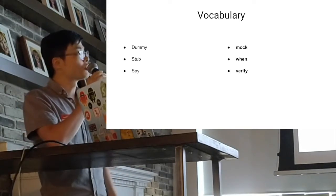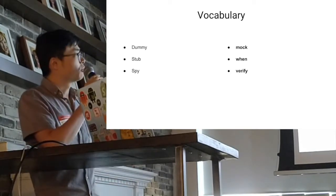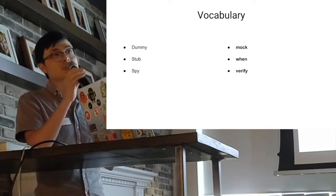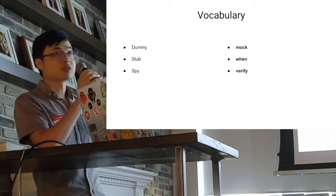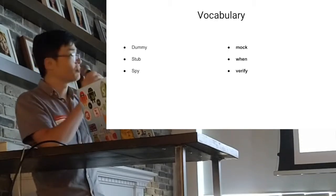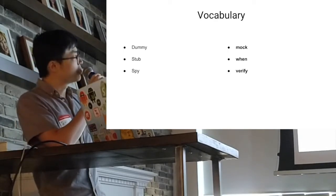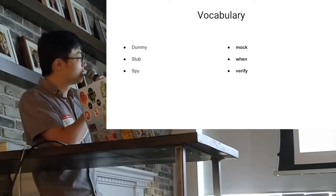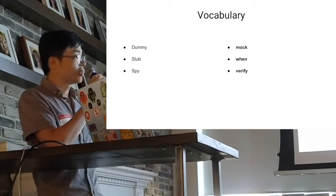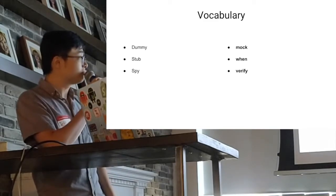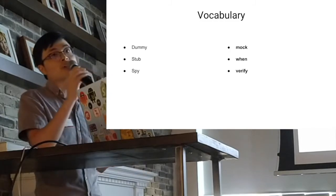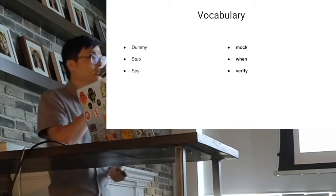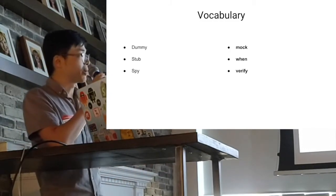When we do a unit test, there is a vocabulary for unit testing. It's actually a map: dummy object use — mock; stub — when you use 'when'; spy; and using verify to check the behavior.